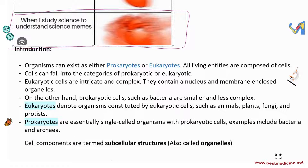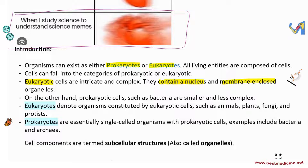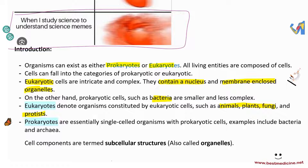So the introduction so far: organisms can exist as either prokaryotes or eukaryotes, and all living entities are composed of cells. Cells fall into categories of prokaryotic or eukaryotic. Eukaryotic cells contain a nucleus and other membrane-enclosed organelles such as mitochondria. Prokaryotic cells like bacteria and archaea are smaller and less complex — they don't have a nucleus or membrane-bound organelles. Eukaryotes include animals, plants, fungi, and protists; prokaryotes include bacteria and archaea. Cell components are termed subcellular structures, also called organelles.